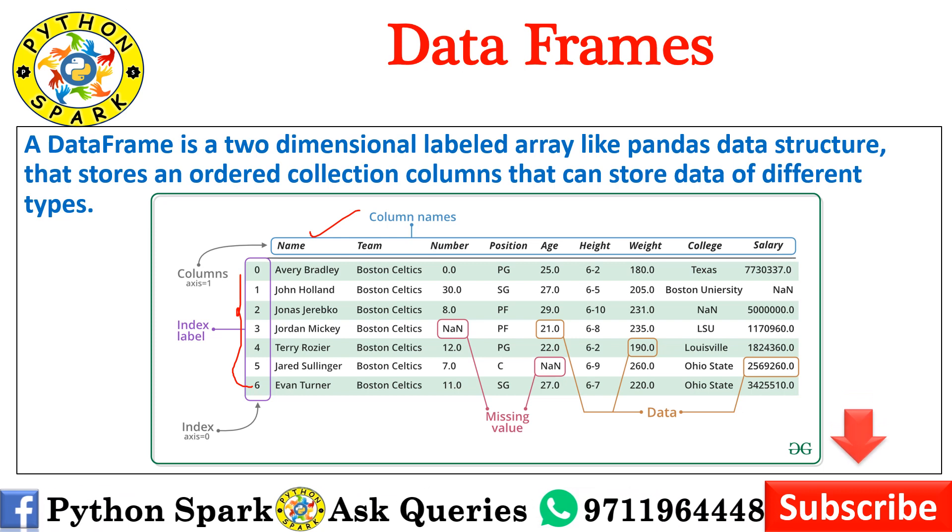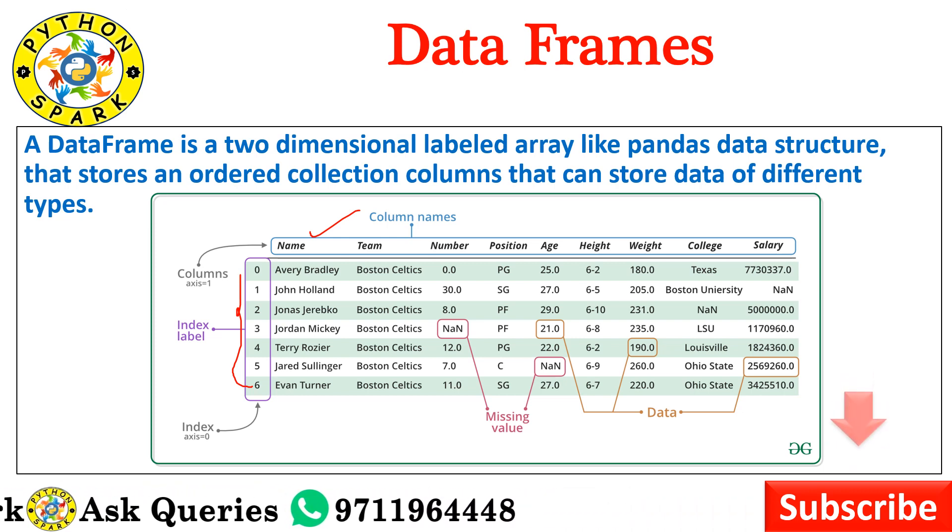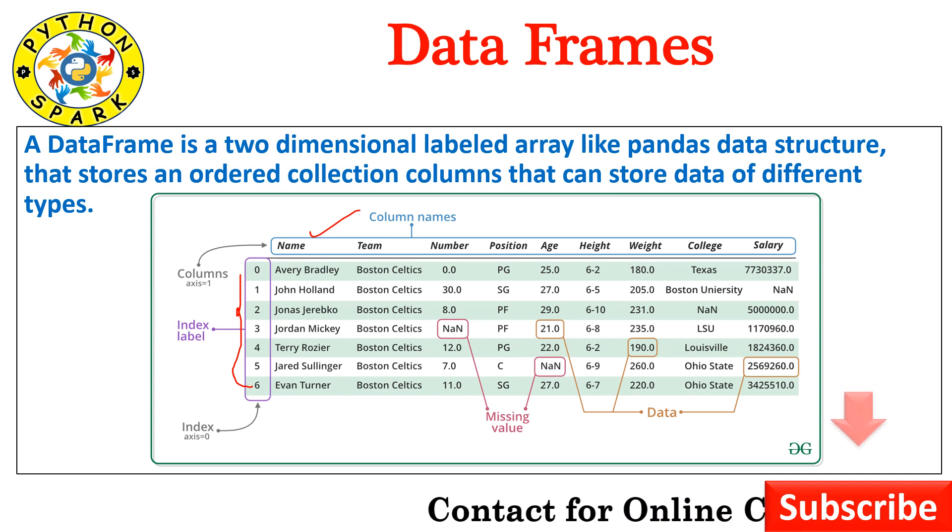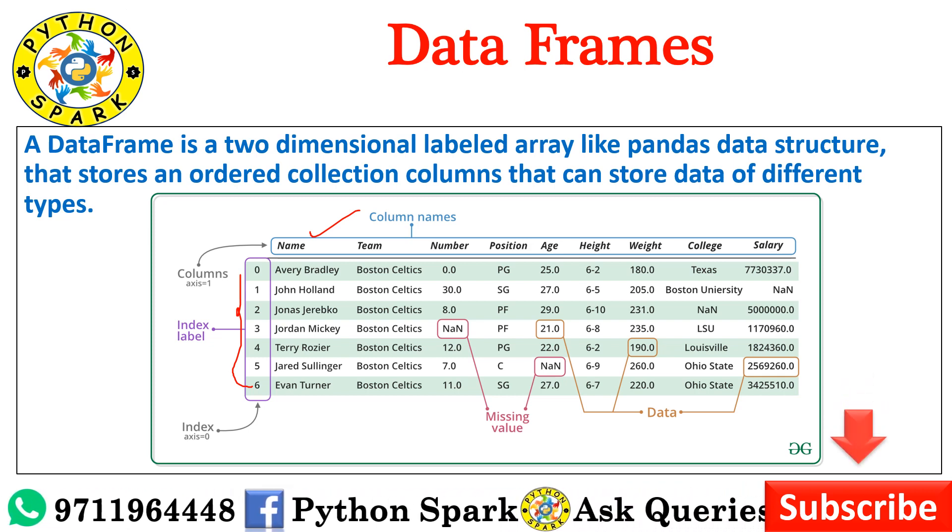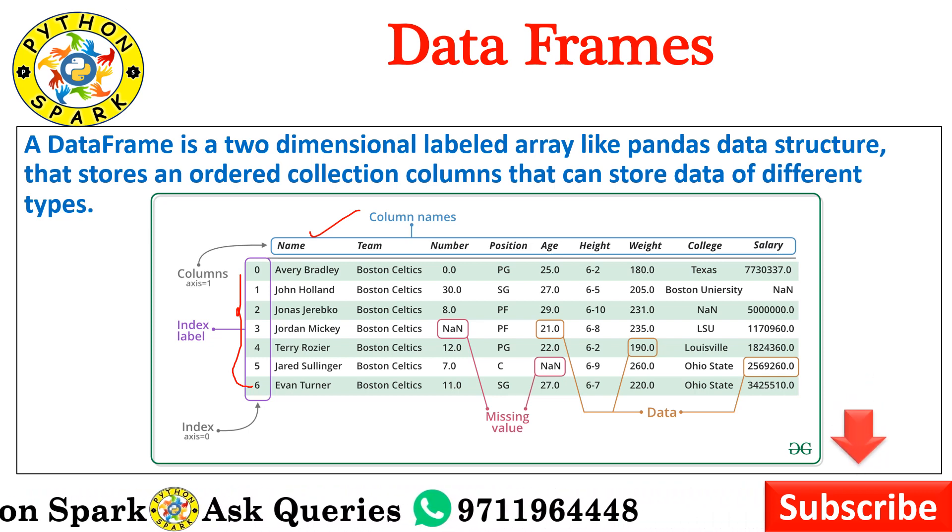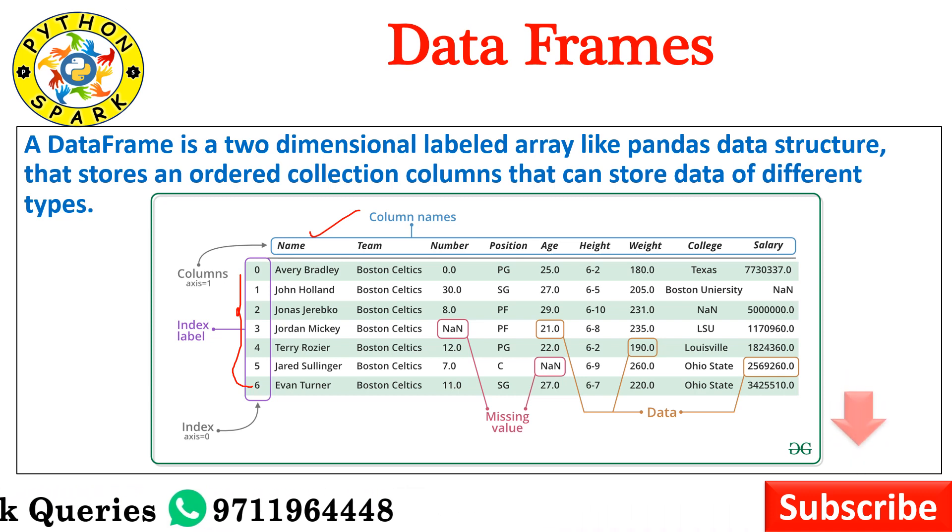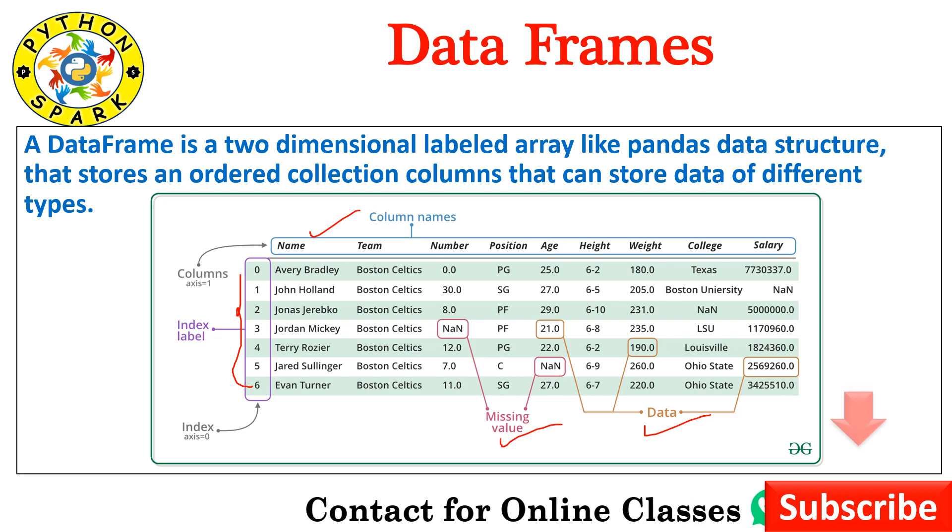NaN basically refers to not a number. We don't have any value. If you want to leave a blank value, you will use NaN. If you forget to write a blank value, it will take it by default. What are all the values? Where NaN is written, what is your missing value? This is your index, these are your columns.